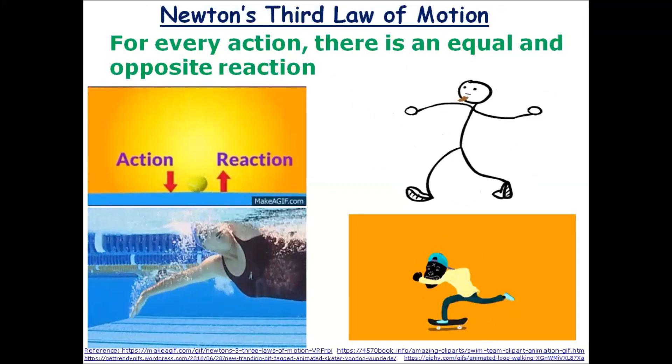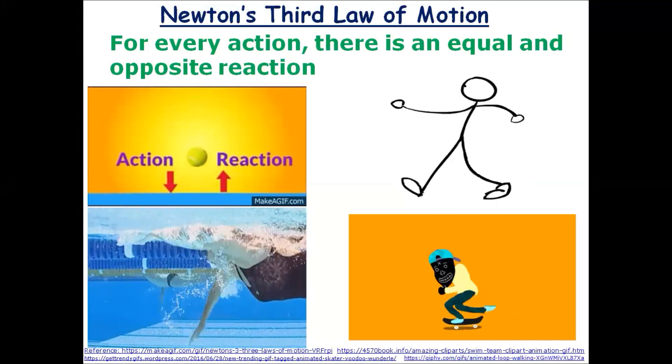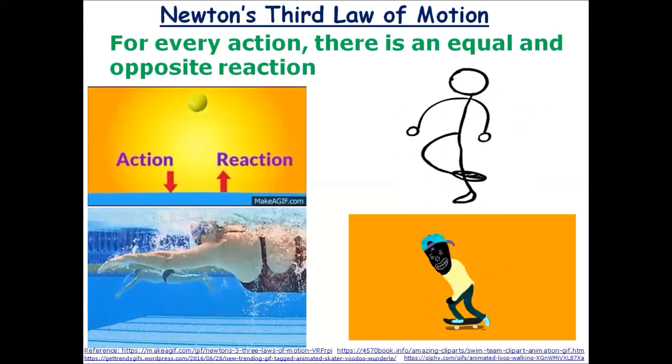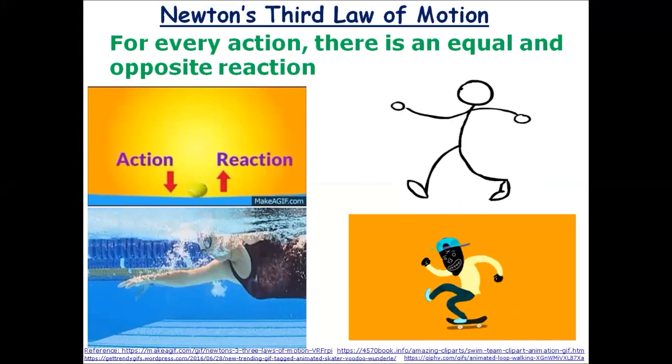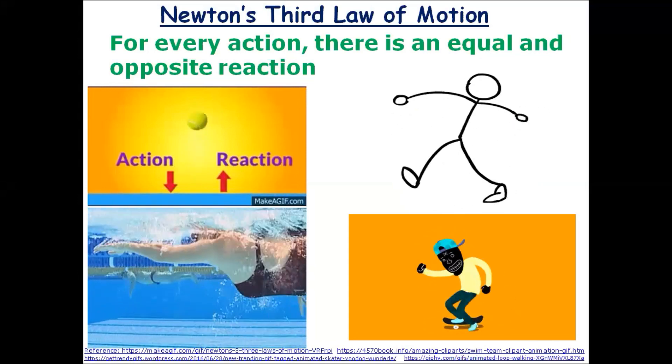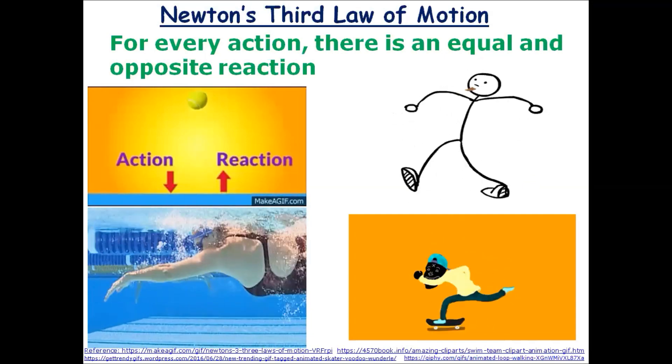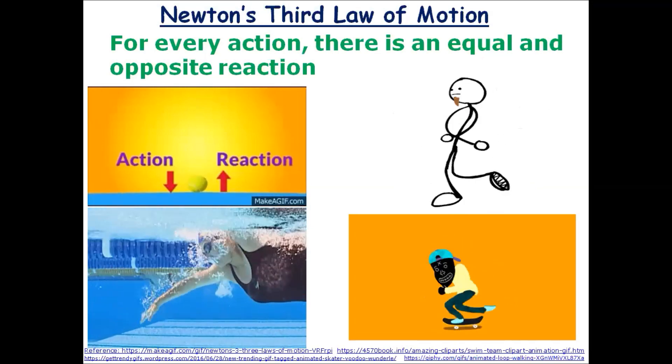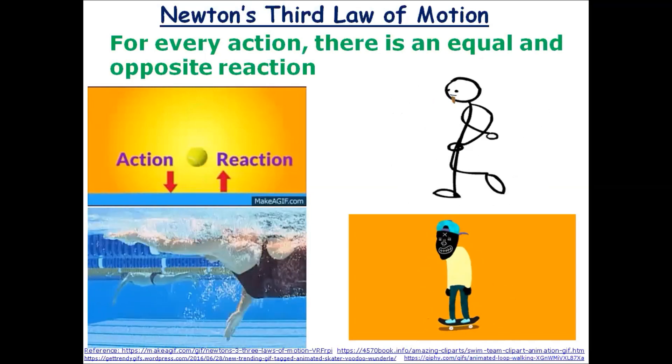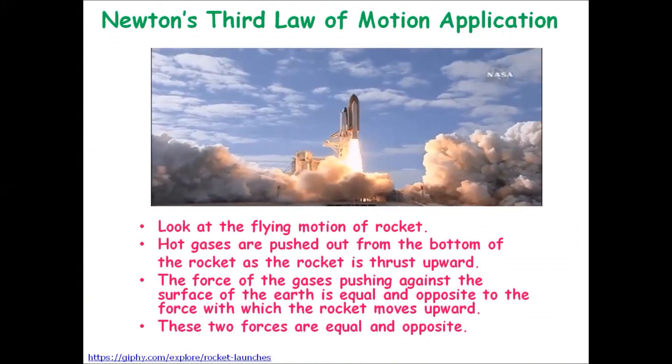Next we have Newton's third law of motion. According to Newton's third law of motion, for every action there is an equal and opposite reaction. For example, in swimming, when a swimmer pushes water backward with her hands and feet (that is action), then water pushes the swimmer forward (that is reaction). Also, while we walk, we push earth backward by applying some force on it, and in turn earth pushes us forward. So we can say for every action there is always an equal and opposite reaction.